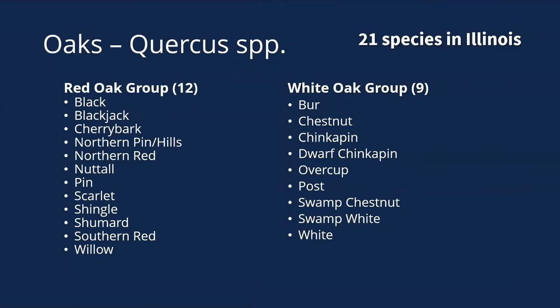Here are our 21 Illinois species. The 12 red oak group species are: black, blackjack, cherrybark, northern pin (also called Hill's), northern red, Nuttall, pin, scarlet, shingle, Shumard, southern red, and willow oak. The 9 white oak group species are: bur oak, chestnut oak, chinkapin oak, dwarf chinkapin oak, overcup oak, post oak, swamp chestnut oak, swamp white oak, and our state tree, the white oak.